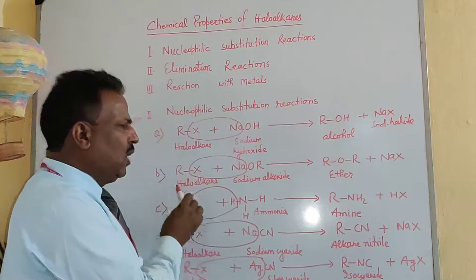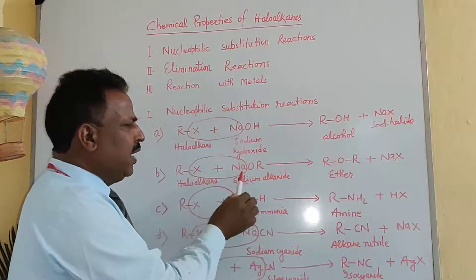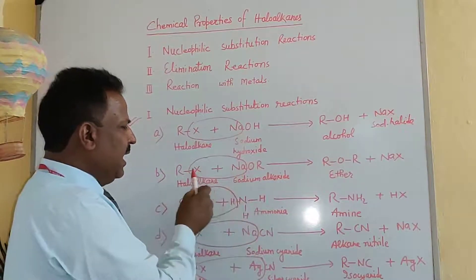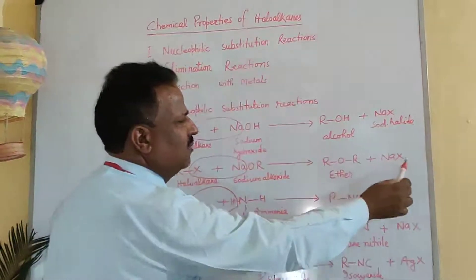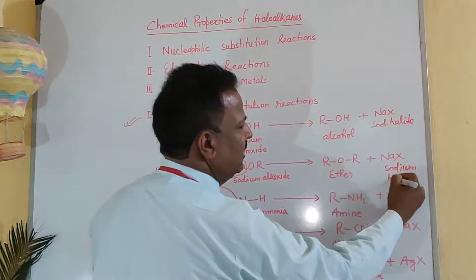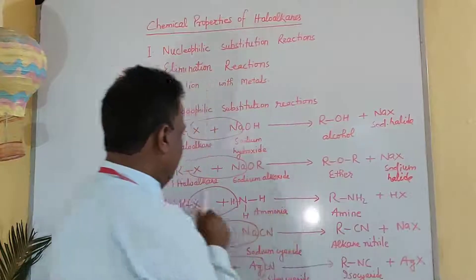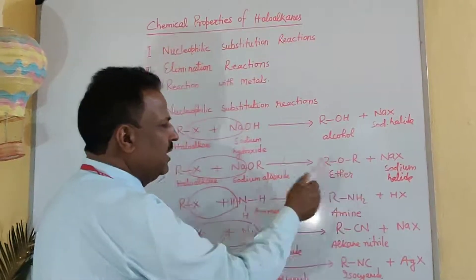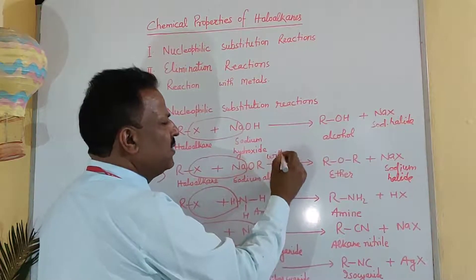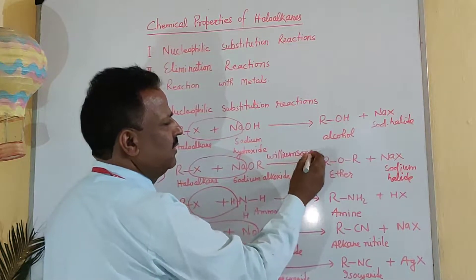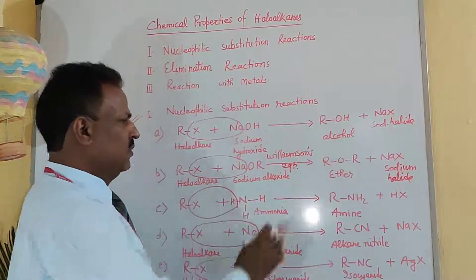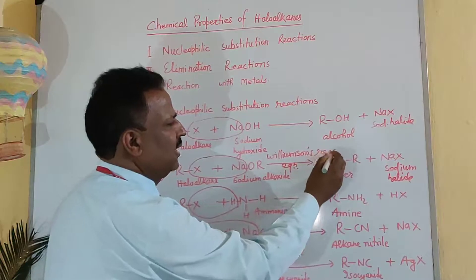When a haloalkane reacts with sodium alkoxide (NaOR), then Na and X become sodium halide, and the main product is ether, ROR. This is a well-known reaction called Williamson's synthesis.